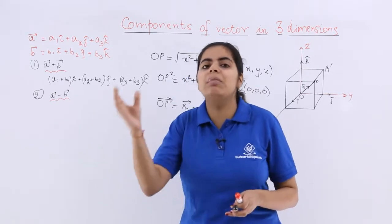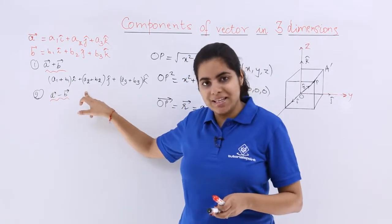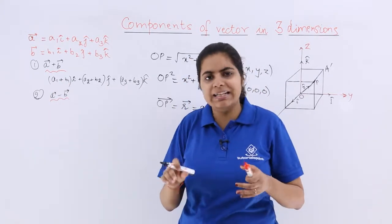But my dear friends, if it is b minus a, then it will be (b1-a1) i cap, (b2-a2) j cap, (b3-a3) k cap. I hope you understand that.